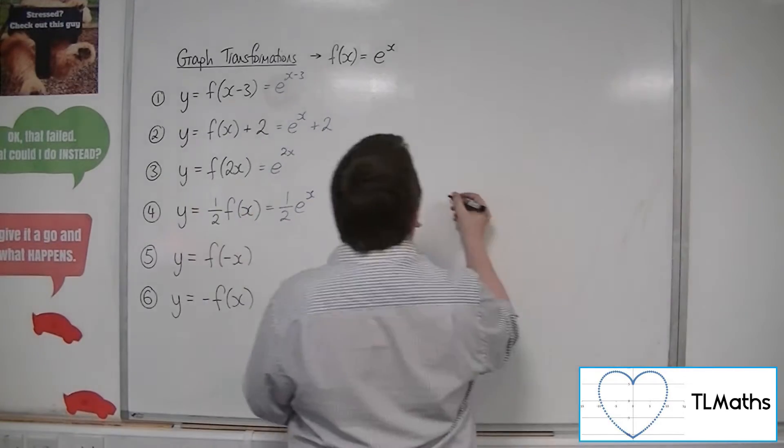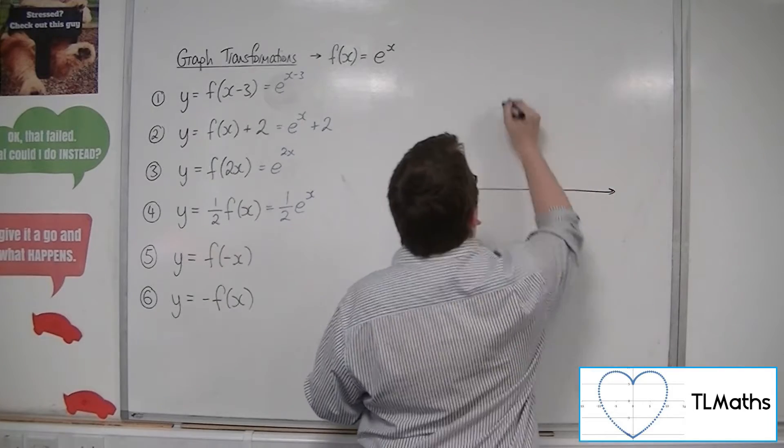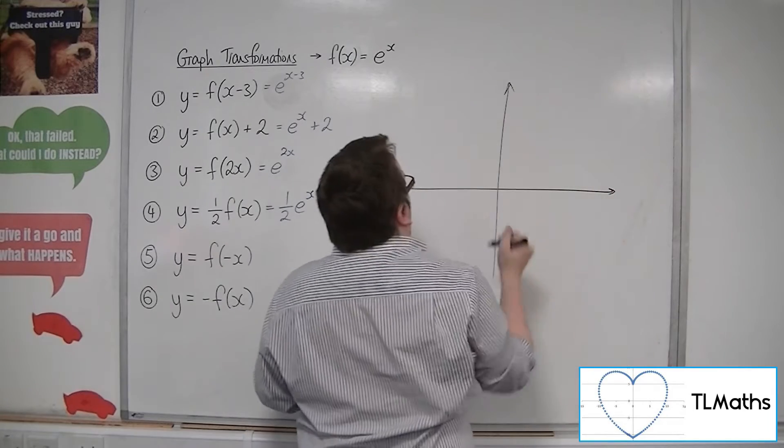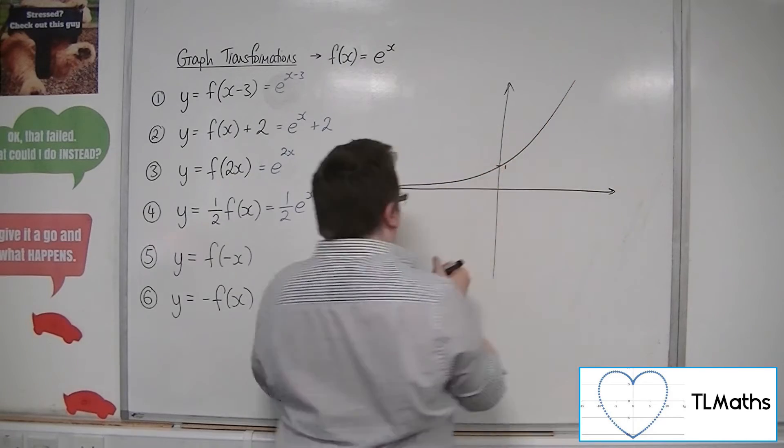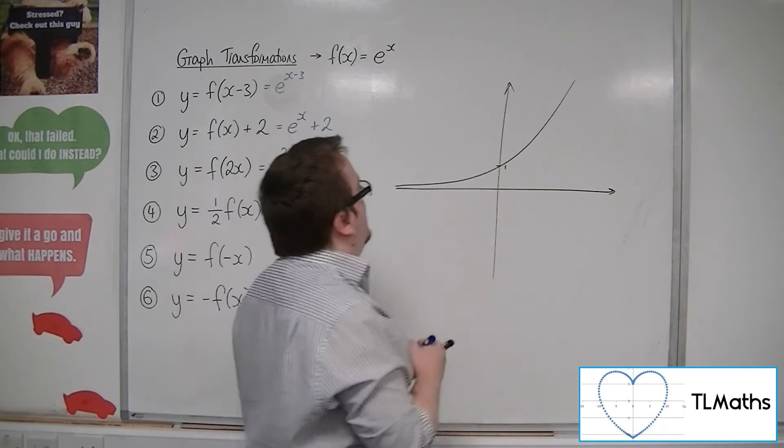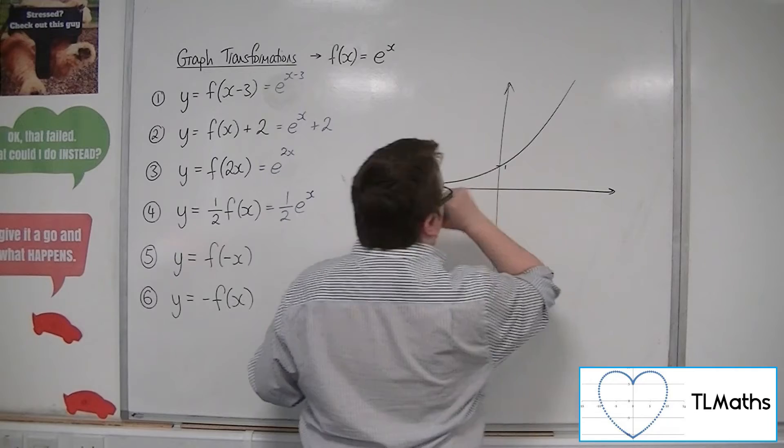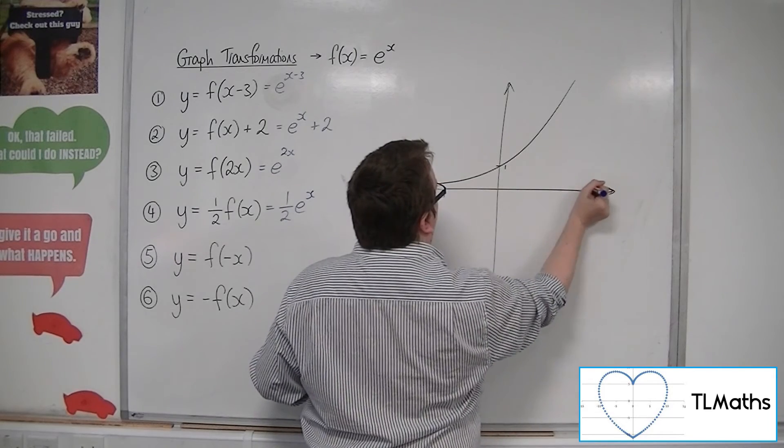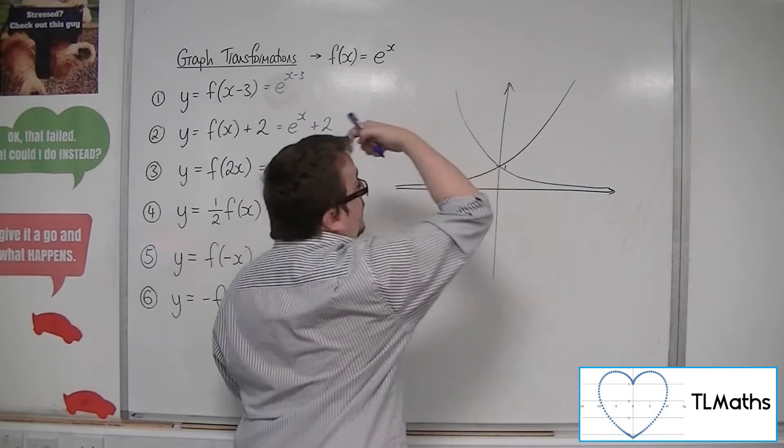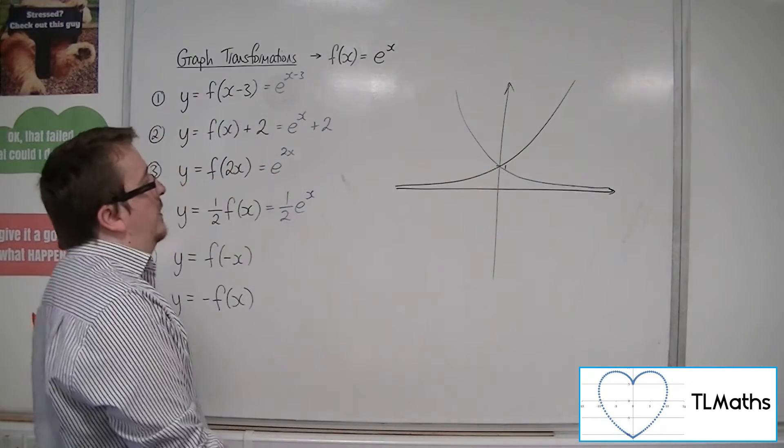Now, f of minus x. So, there's e to the x. So, reflecting that in the line x equals 0 in the y-axis. Would look something like that.